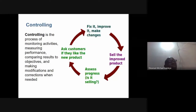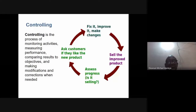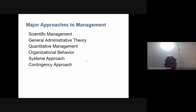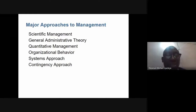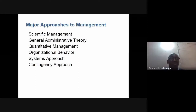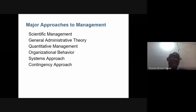This role is called controlling, and it is one of the main functions of management. Now let us discuss management thoughts — different approaches to management. There are about five or six core approaches: scientific management, general administrative theory, quantitative management, organizational behavior, systems approach, and contingency approach.